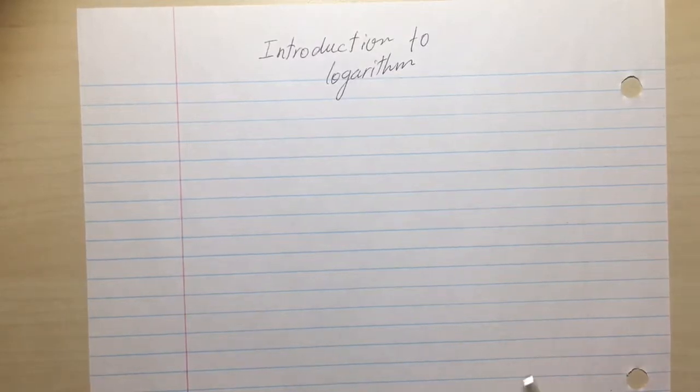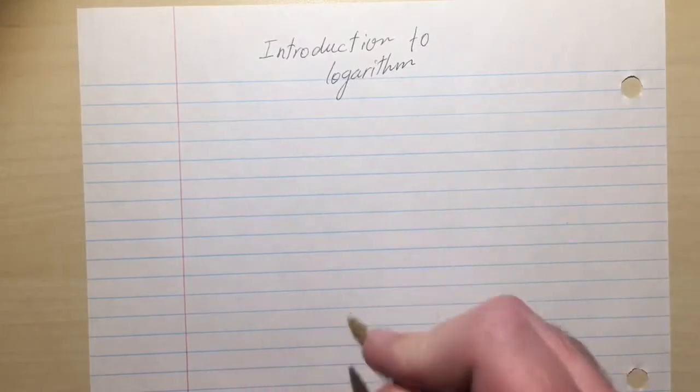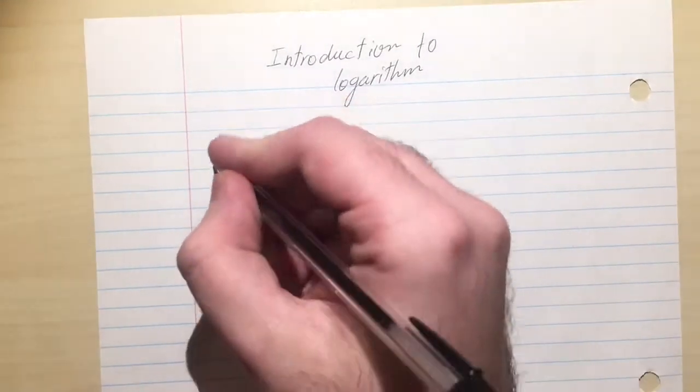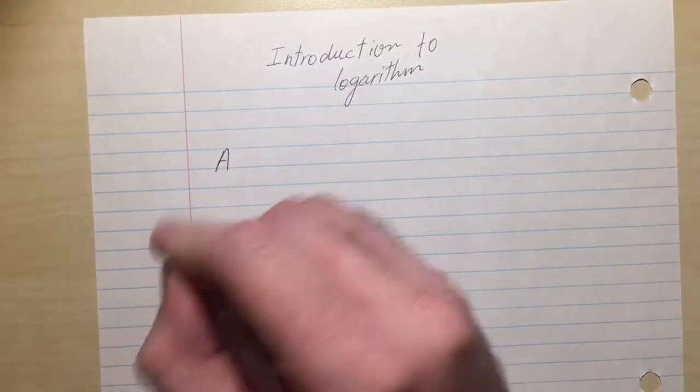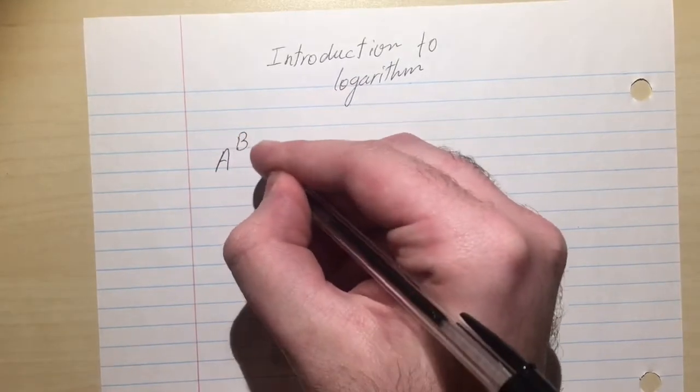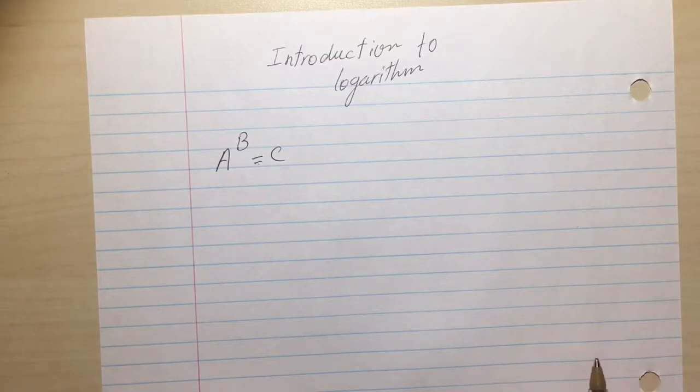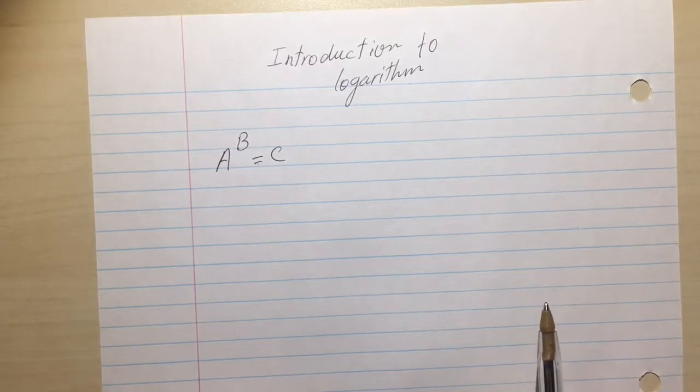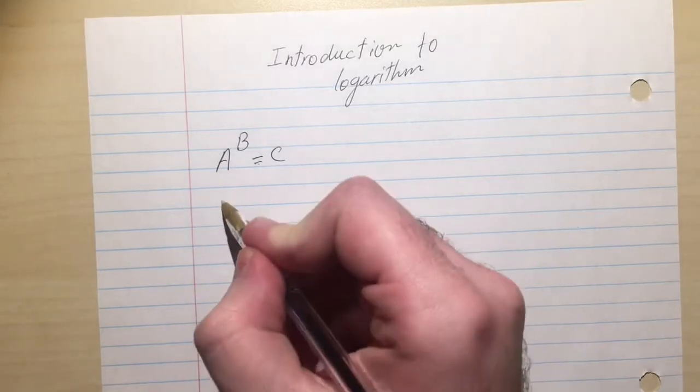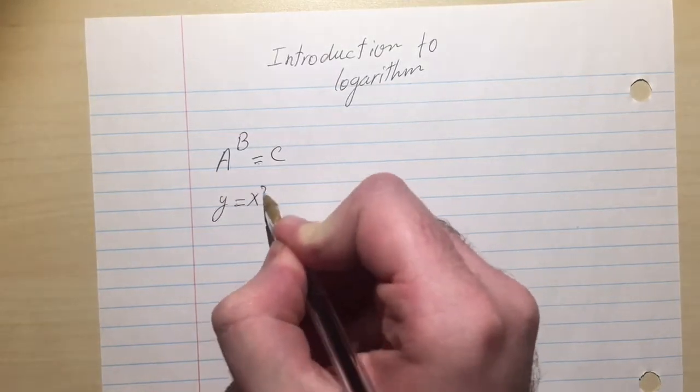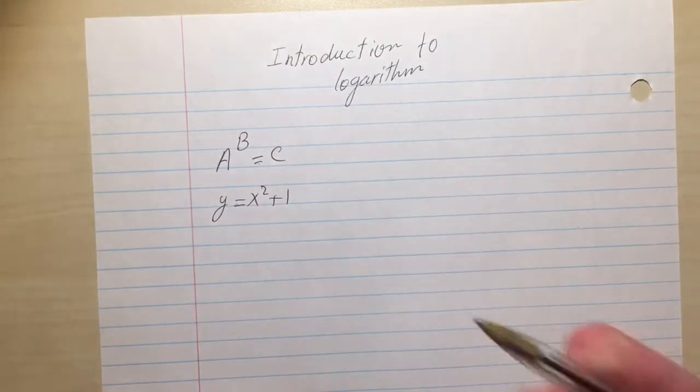Imagine I have A to the B equals to C. So here I'm writing C in terms of A and B, like for example here I write x squared plus 1, I wrote y in terms of x.